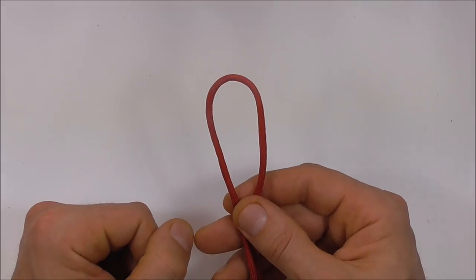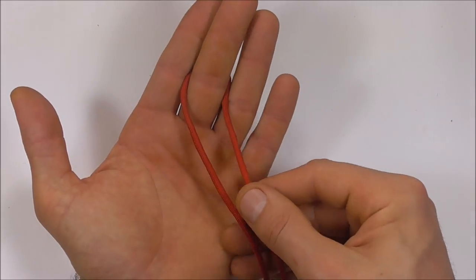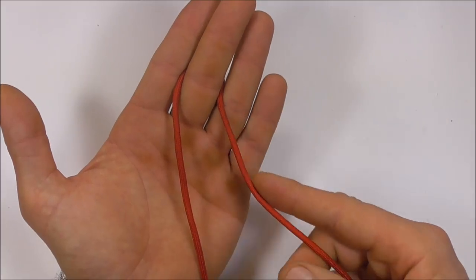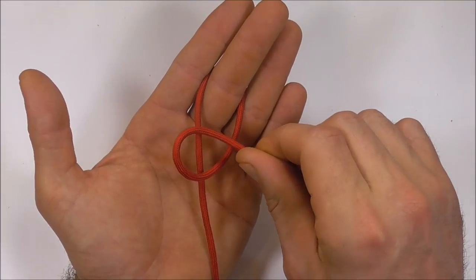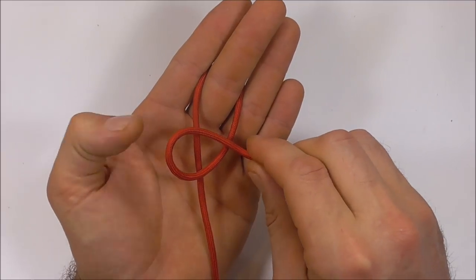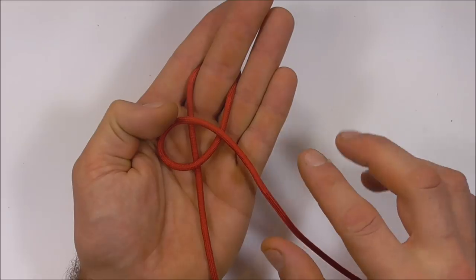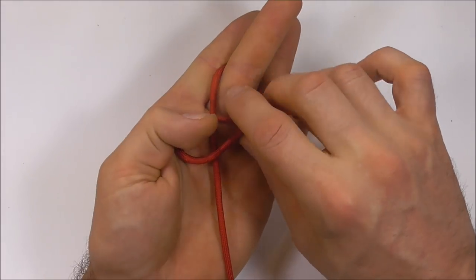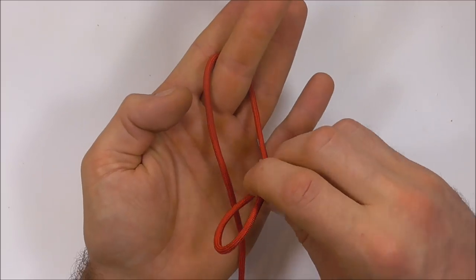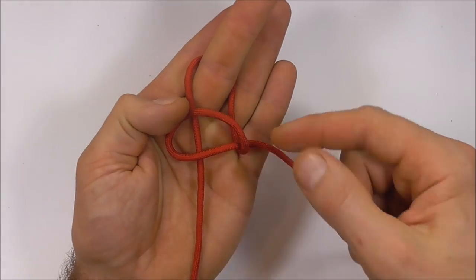We're going to first tie a diamond knot. So form a bight and then place that bight over your middle finger, and then on the right hand side form an overhand loop. Place that loop over the left strand. Pinch it off where it crosses and rotate that 180 degrees away from you.